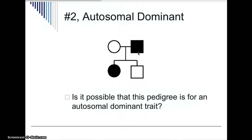Let's look at this pedigree. Could this pedigree be for an autosomal dominant trait? We need to figure out the possible genotypes of the parents and children. The father has the trait, so he would have to have one dominant allele if it was autosomal dominant. The child also has the trait and would also have to have at least one dominant allele. The mom and the son both have two recessive alleles. If we do a Punnett square, this is definitely possible if the father is heterozygous. So the answer is yes.